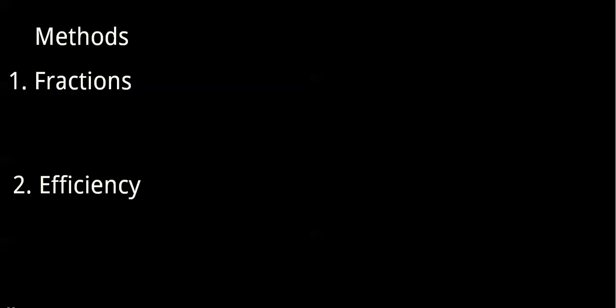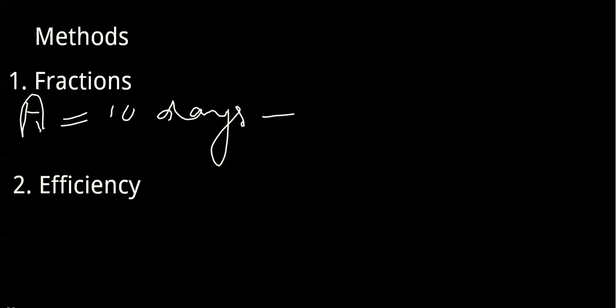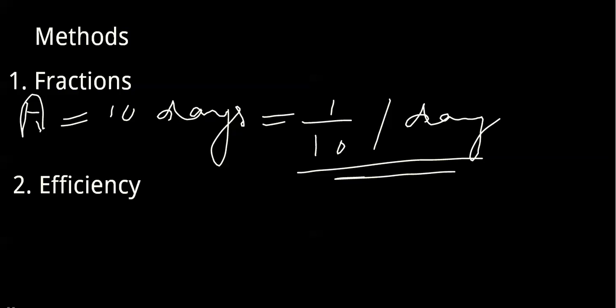There are basically two methods to solve these questions. The first one is fractions — for example, if A can do a job in 10 days, he can do one-tenth of the job per day. The second and easier method is by finding the efficiency.